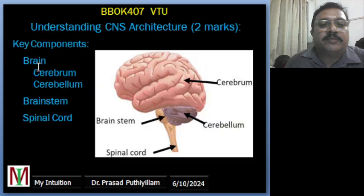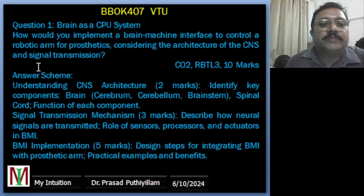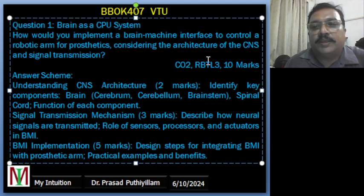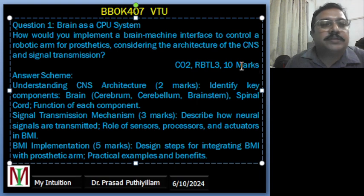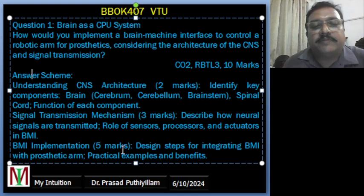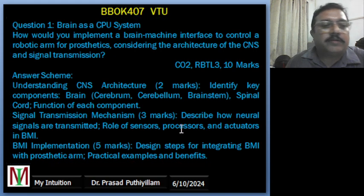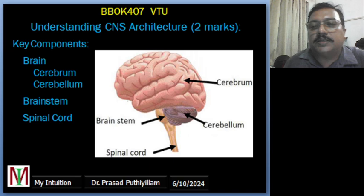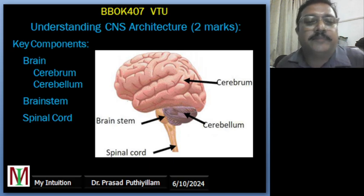That is the question framed. The answer scheme is connected to course outcome 2, with revised taxonomy level 3. It carries 10 marks. The answer scheme breakdown: understanding the CNS architecture — 2 marks; signal transmission mechanism — 3 marks; BMI implementation — 5 marks. Mainly electronics or mechanical engineering students can understand it well.